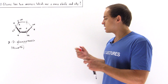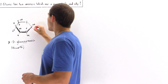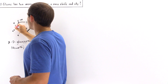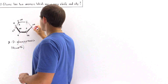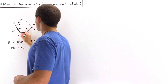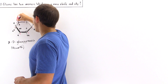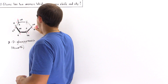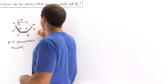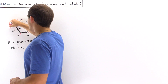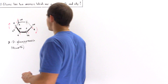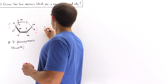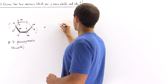To draw the chair conformation, we pull carbon number one downward and carbon number four upward. So carbon one is here, carbon two, carbon three, carbon four, carbon five, and carbon six. We pull carbon one downward and carbon four upward, producing the following chair conformation.